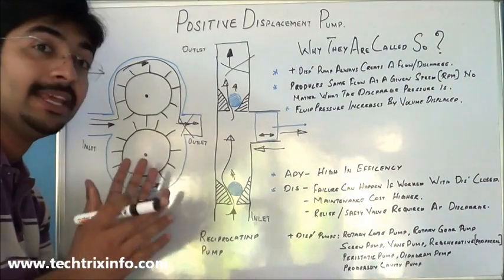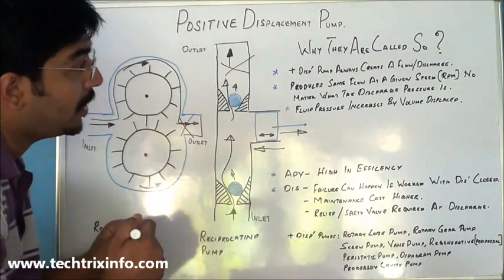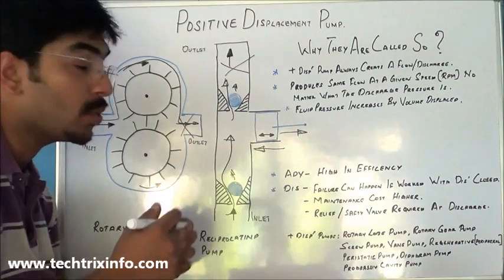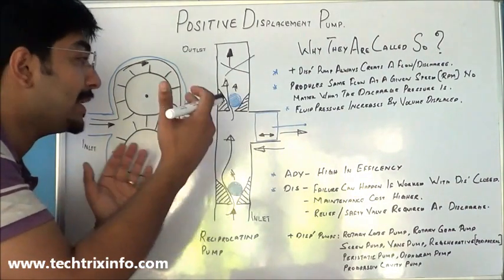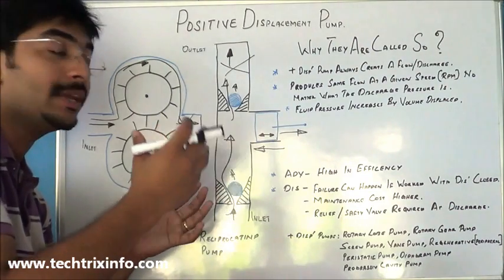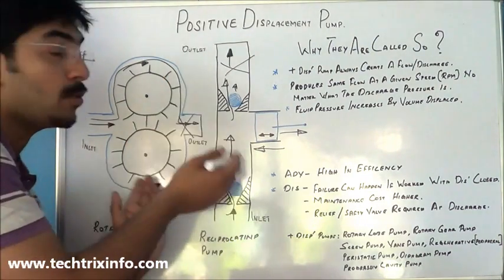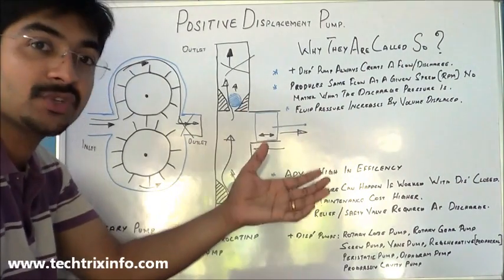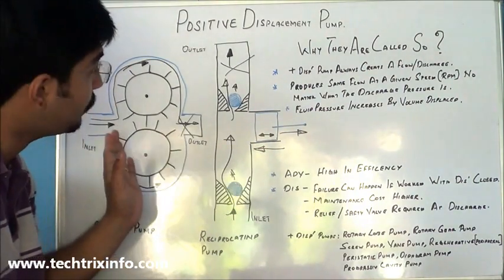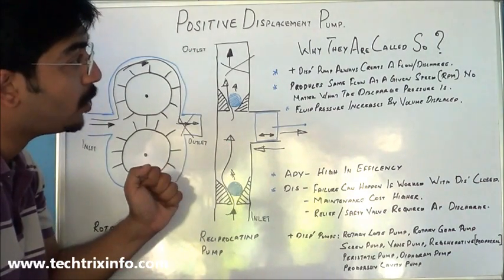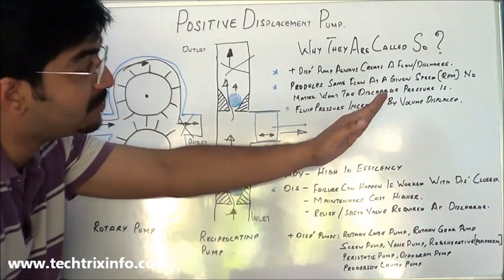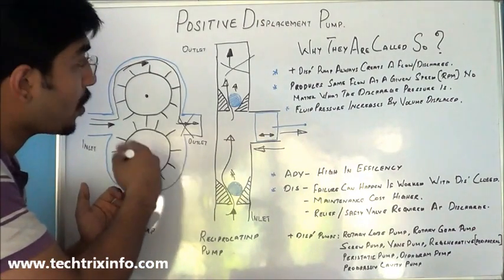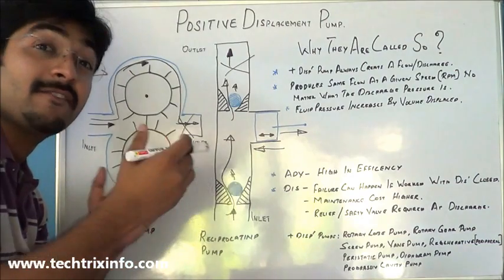One important point to note is that fluid pressure is increased by the volume displaced. The higher the volume getting displaced, the more the pressure will increase. A positive displacement pump creates an increase in pressure by delivering more discharge. It also produces the same flow at a given speed or RPM, no matter what the discharge pressure is — if the pump is working at a constant speed, it produces a definite, fixed amount of flow.